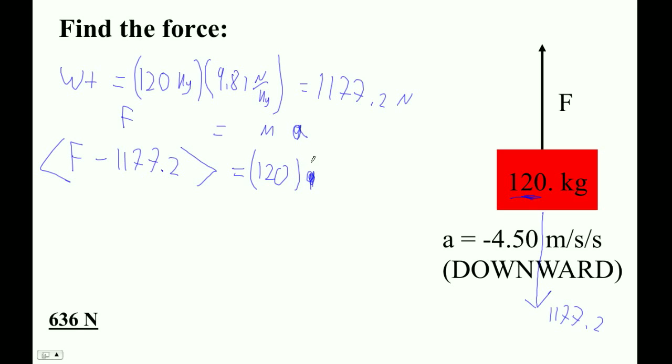The acceleration we know is 4.5 downward, so minus 4.50. And the only thing we don't know is this unknown force. So now we can just solve away. 120 times negative 4.5 plus 1177.2. And we get 637.2 newtons. That's got to be our force.